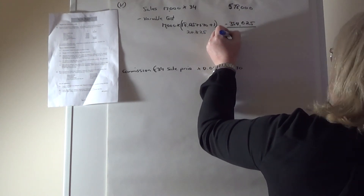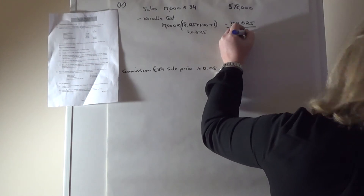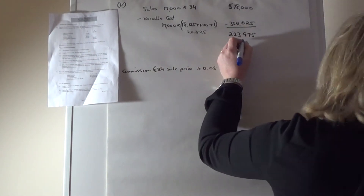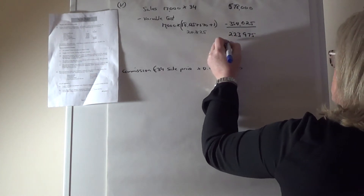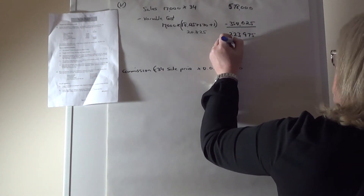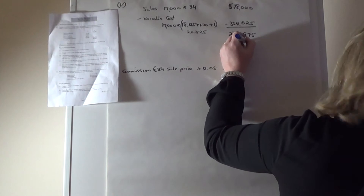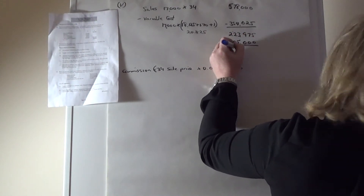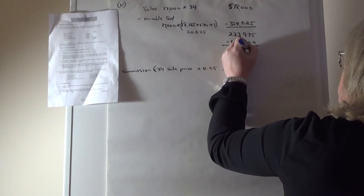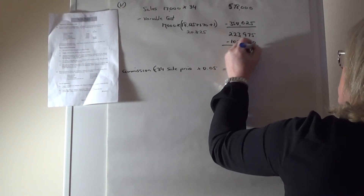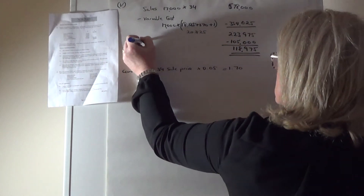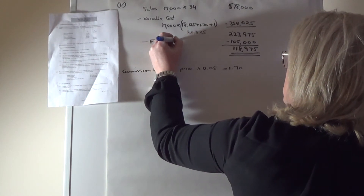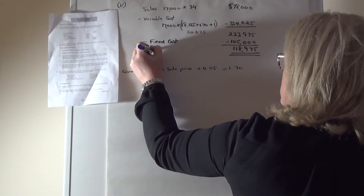Taking out variable costs of 354,025 from sales of 578,000 gives the new contribution. Fixed costs remain unchanged at 105,000, so subtracting those gives the final profit figure for part five.